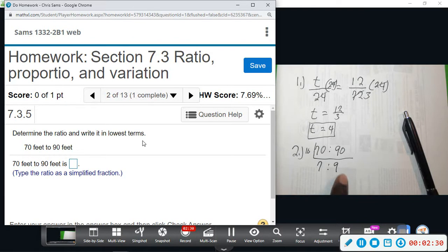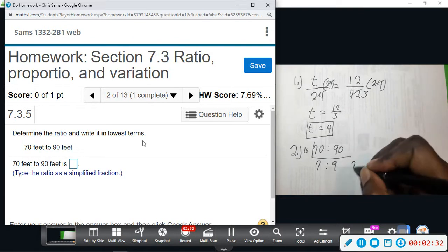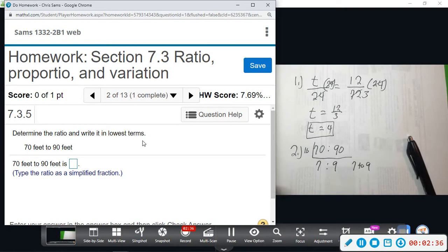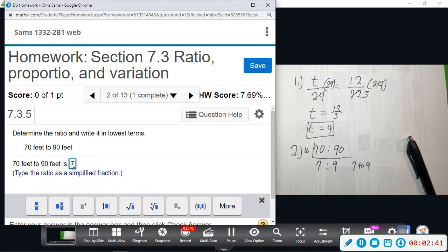All right, so this is the ratio. When we do ratios, we just do this colon, or you can write 7 to 9 like that, but that's the way we do ratios.